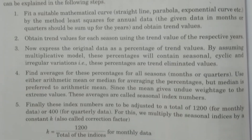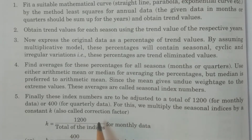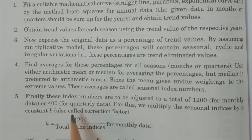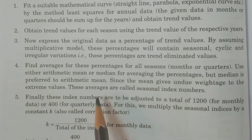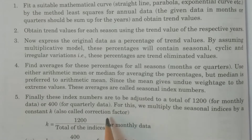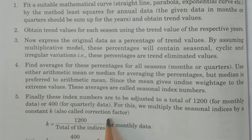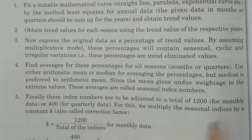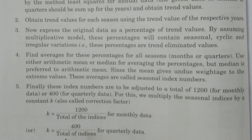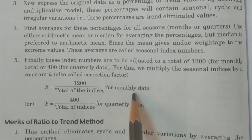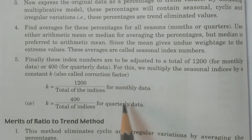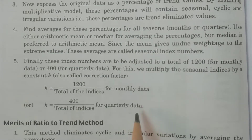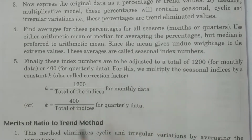Finally, we have to do one more adjustment. We have to adjust these index numbers — the trend-eliminated values and the percentages — which are called seasonal indexes. These seasonal indexes are to be adjusted with a total of 1200 for monthly data, 400 for quarterly data. We multiply the seasonal index by a constant K, where K equals 1200 divided by the total of index numbers for monthly data, and K equals 400 divided by the total of indexes for quarterly data.